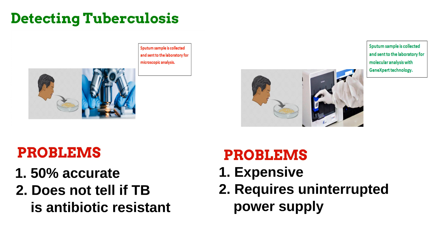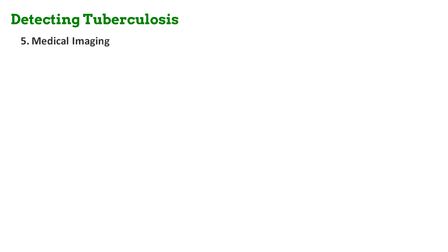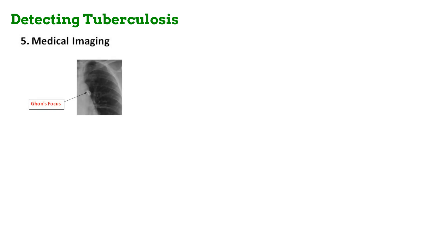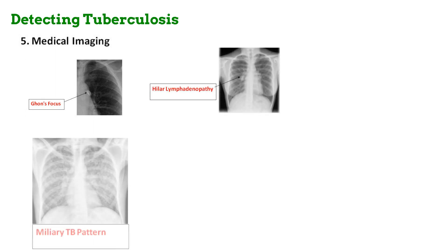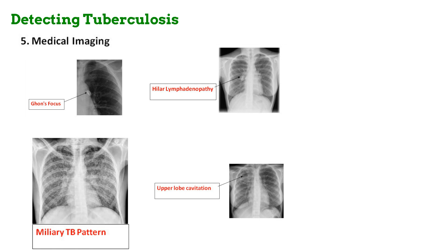This is where radiography comes in. Even though radiography is not a standard tool for diagnosing or confirming tuberculosis, it can be used to safely rule it out. This is because pulmonary tuberculosis produces certain distinct patterns on a chest radiograph, including focal areas of lung opacification called the Ghon focus, enlargement of the lymph nodes in the hilum and mediastinum known as lymphadenopathy, formation of many tiny nodules known as the miliary tuberculosis pattern, and cavitation in the upper lobes of the lungs. In countries with limited availability of GeneXpert, the absence of these patterns in a patient's chest X-ray can rule out an active tuberculosis infection, conserving GeneXpert tests even in highly populated areas that need mass testing.